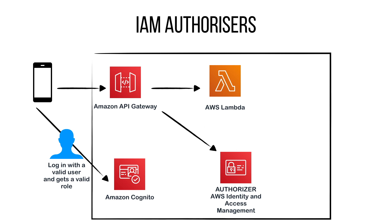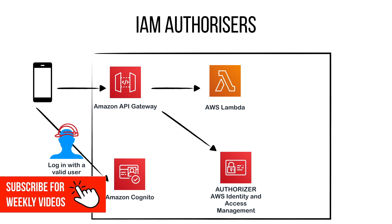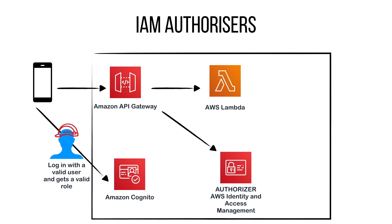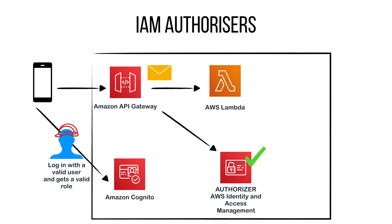The last type of authorizer is IAM authorizers. Here we can allow an API caller to invoke an API, but the caller must have an IAM policy that permits invoking this API. The first step is to set the authorizer type to AWS IAM. Then the client that wants to execute the API needs to obtain a valid role. I'll show you an example using Cognito identity pools: we log in a user to a user pool, use the identity pools to get a valid role, execute the API Gateway call with that role, and then IAM — the Identity and Access Management service — validates everything before the Lambda is executed.